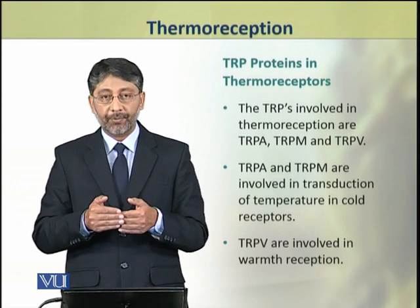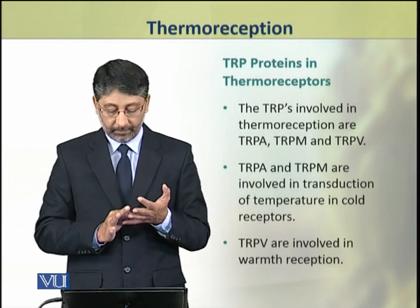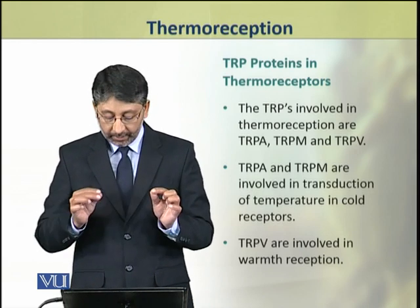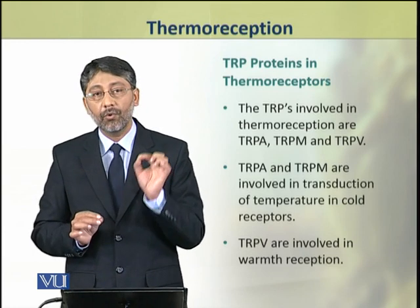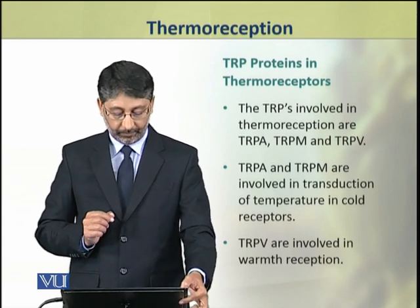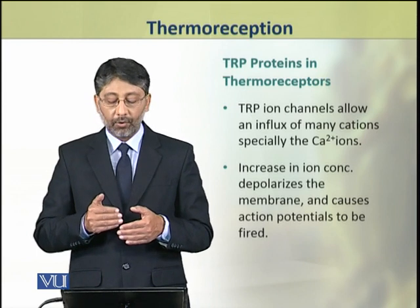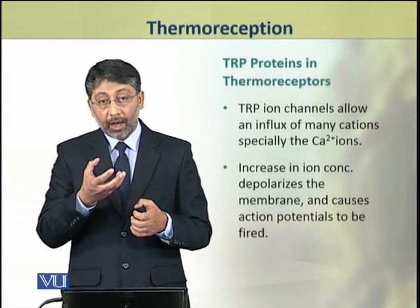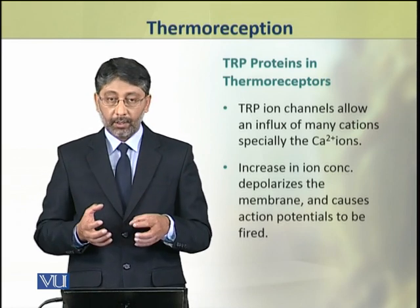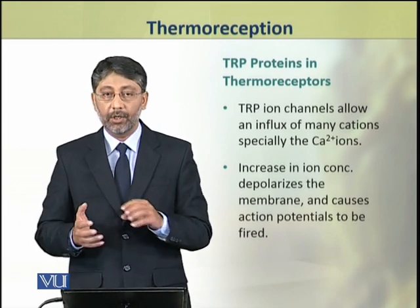The TRPs involved in thermoreception are of three types: TRP A, M, and V. TRP A and M are involved in the transduction of temperature in cold receptors, while TRP V is involved in warmth reception. When activated, these TRP ion channel proteins allow influx of many cations, especially calcium ions. The increased ionic concentration depolarizes the membrane and causes action potentials to be generated.